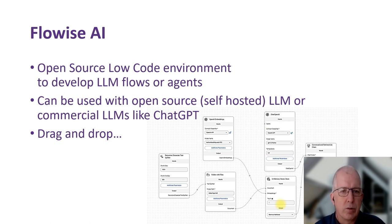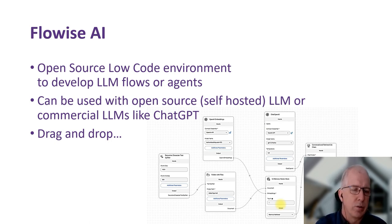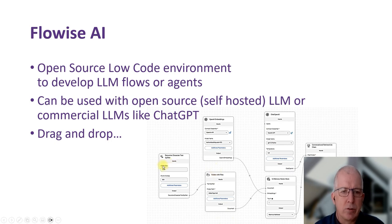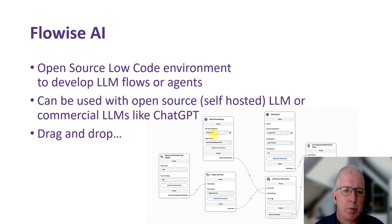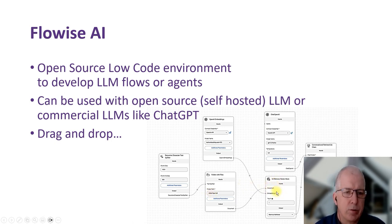FlowWise AI is what's called an open source local code environment. You can use it online in a hosted environment, but in this case I just downloaded the source code and ran it on that same big desktop. You get an environment where you just drag and drop nodes and connect them to build up all the different steps that you need for a chatbot. You can use FlowWise AI in combination with a commercial LLM like ChatGPT or with an open source self-hosted LLM. In this case I used the OpenAI API to talk to the LLM, but the data is stored locally in an in-memory vector store, so it doesn't go to OpenAI.